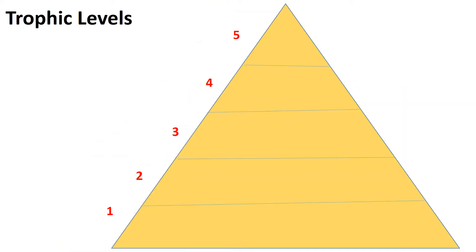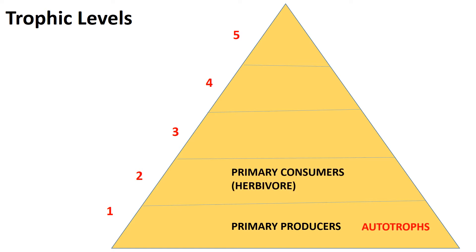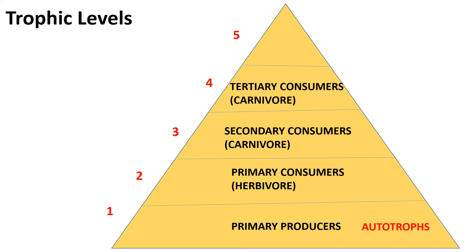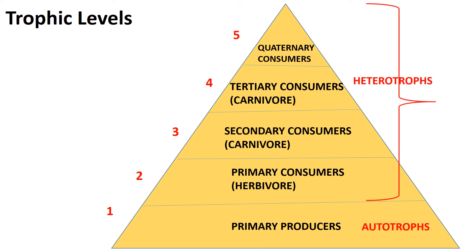There are five trophic levels. Primary producers are the base of every food chain; these organisms are called autotrophs. Primary consumers are above the primary producers. Secondary consumers are above the primary consumers. Tertiary consumers are above the secondary consumers. Quaternary consumers are above the tertiary consumers. All the animals in these four levels are heterotrophs. Food chains end with quaternary consumers or top predators.